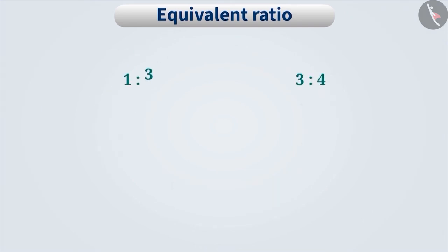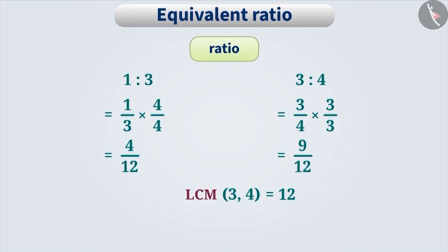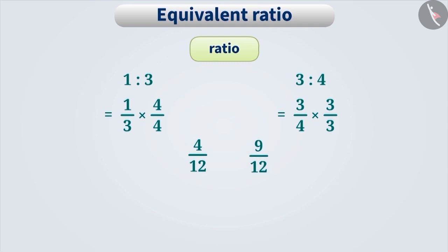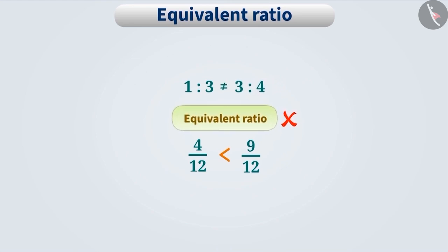Now let's compare 1 is to 3 and 3 is to 4. Expressed as fractions, the LCM of denominators 3 and 4 is 12. So 1 by 3 multiplied by 4 by 4 equals 4 by 12, and 3 by 4 multiplied by 3 by 3 equals 9 by 12. Since 4 by 12 is less than 9 by 12, the two fractions are not the same. Therefore, 1 is to 3 and 3 is to 4 are not equivalent ratios.